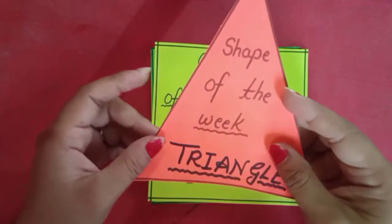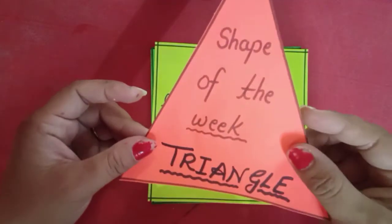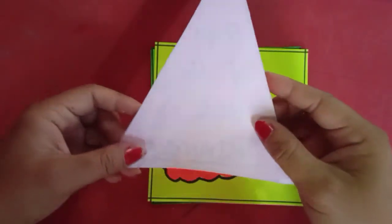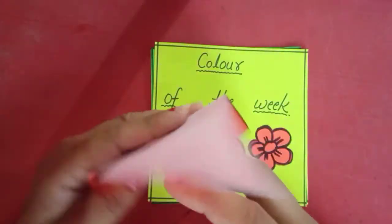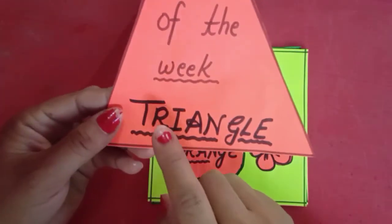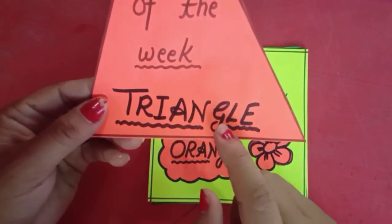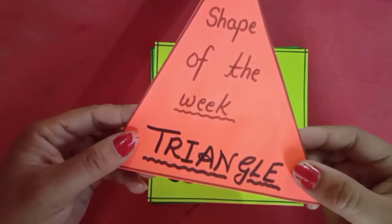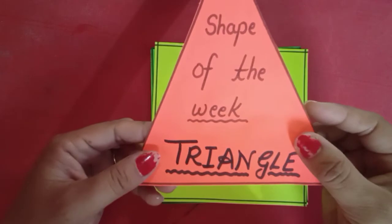Next one is shape of the week. Shape of the week is triangle. This is a triangle shape. T-R-I-A-N-G-L-E. Triangle. Shape of the week is triangle.